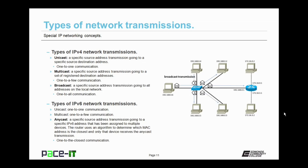Finally, there are broadcast transmissions. This is where a specific source address transmission is going to all addresses on the local network. This can be considered one-to-all communication, because all devices on the local network are going to be able to receive this broadcast transmission.